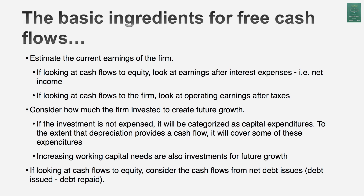The second step is estimating how much of those earnings will be reinvested back into the business to generate future growth. That's a discretionary choice — companies can choose to reinvest or not. The third step, which applies when looking at cash flows to equity, is accounting for cash flows to and from debt holders: interest and principal payments go out, but when you borrow money, cash comes into the business, and as an equity investor you must count that cash flow as well.